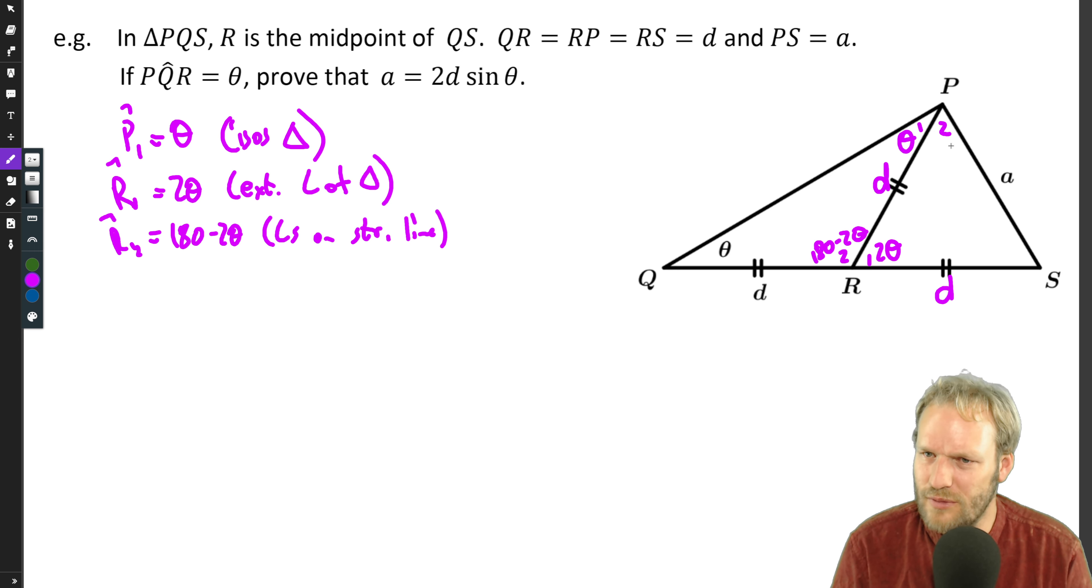And maybe in this right-hand triangle, well if that's 2 theta, then each of these angles here is just 90 minus theta because they need to be the same and they must all add up to 180. So P2 is equal to S is equal to 90 minus theta, and that's because of sum of angles in our isosceles triangle.